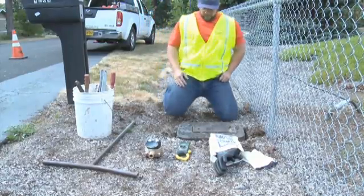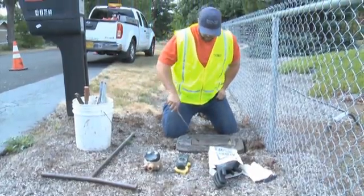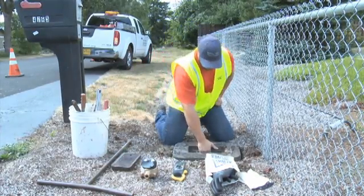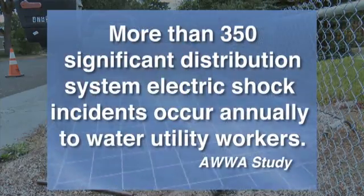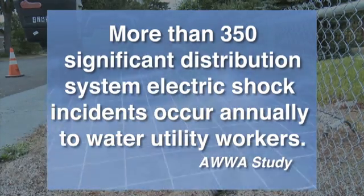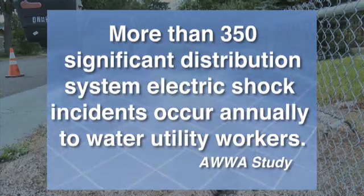A severe or even fatal shock can occur if enough electricity is present in the pipe or meter. According to an AWWA study, more than 350 significant distribution system electric shock incidents occur annually to water utility workers.